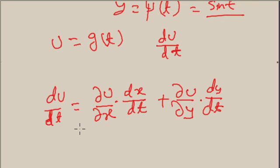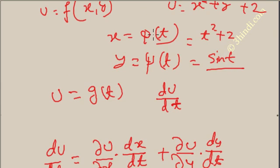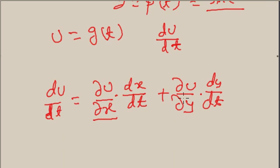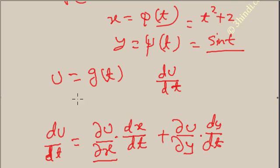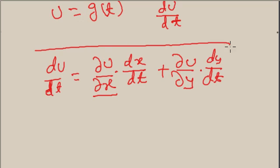I am explaining here: you can only differentiate u partially with respect to x and y. So the first factor is ∂u/∂x — the partial differentiation of u with respect to x — multiplied by dx/dt, because x is a function of t. Similarly, you differentiate u partially with respect to y, giving ∂u/∂y, and multiply by dy/dt, because y is a function of t. This formula is known as the total derivative.